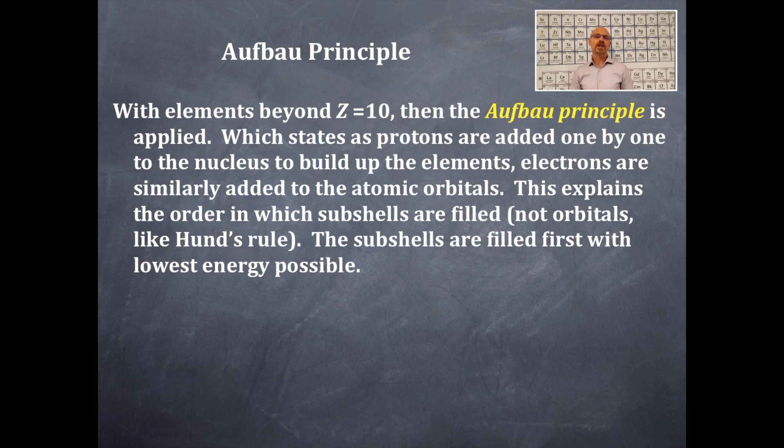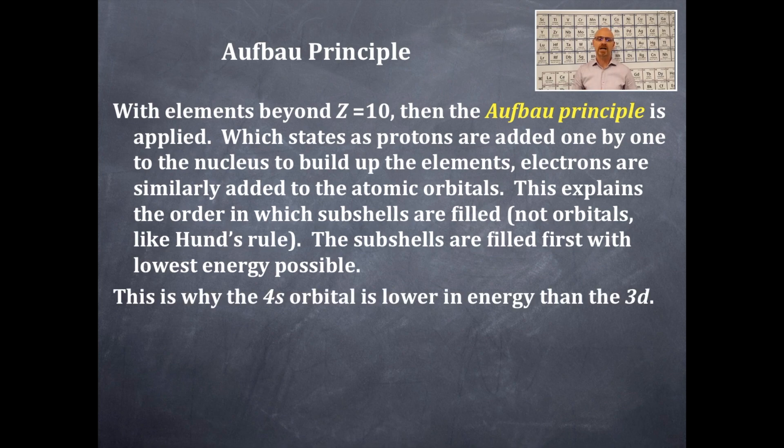With elements beyond Z of 10, the Aufbau principle is applied, which states as protons are added one by one to the nucleus to build up new elements, electrons are similarly added to the atomic orbitals. This explains the order in which subshells are filled, not orbitals like Hund's rule. The subshells are filled first with lowest energy possible.